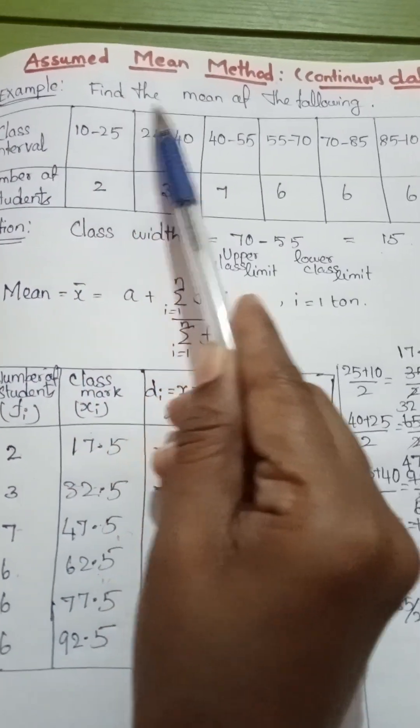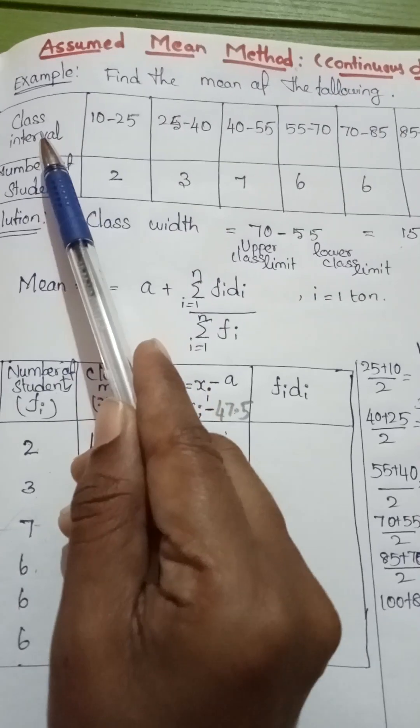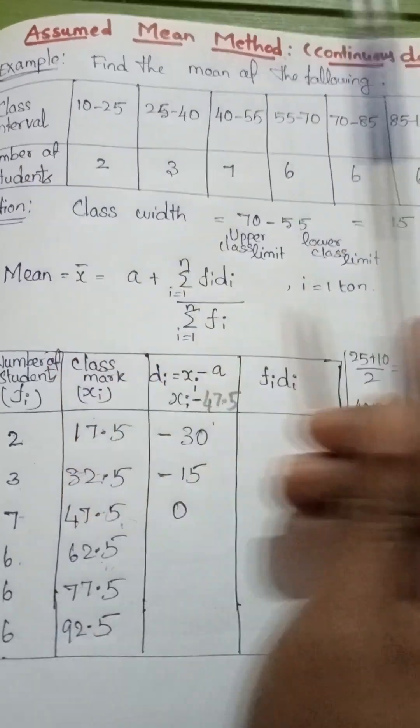For example, find the mean of the following given data. Class interval and number of students are given.